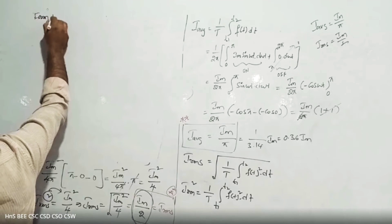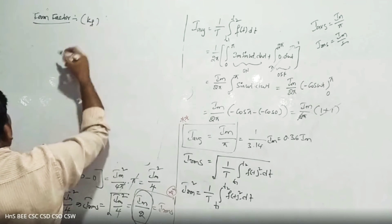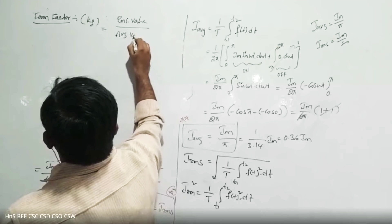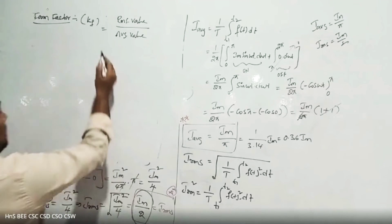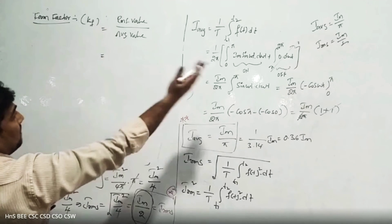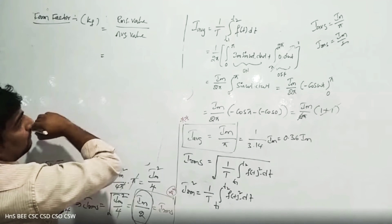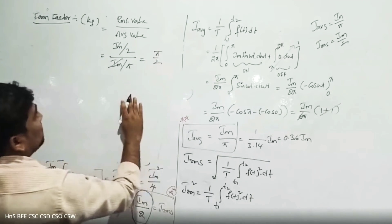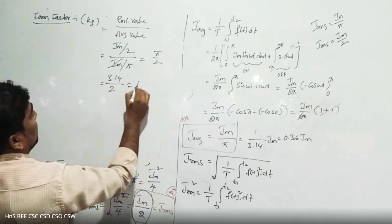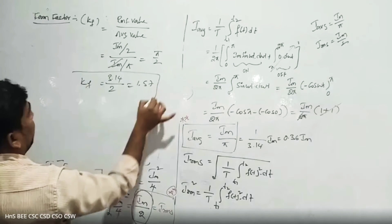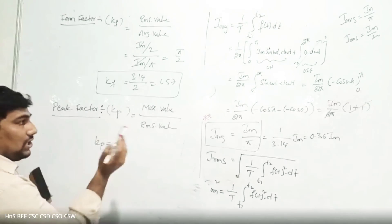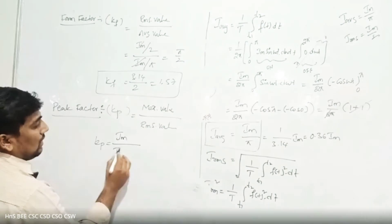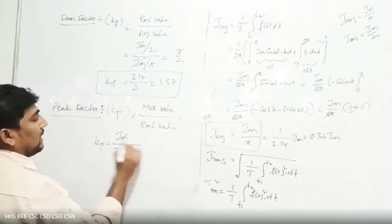Form factor is represented with suffix F — it is the ratio of RMS value to average value. Substituting the values: form factor = (Im / 2) / (Im / π). The Im terms cancel, giving π / 2 = 3.14 / 2 = 1.57. Now for peak factor — it is the ratio of maximum value to RMS value. Substituting: peak factor = Im / (Im / 2) = 2. So the peak factor for a half-wave rectifier is 2.